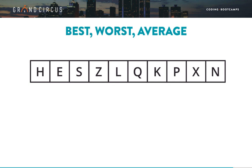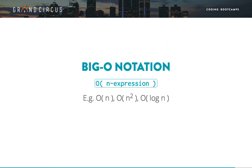Let's look at the most common algorithm ratings. These are expressed in what's called big O notation. The format is a capital letter O, which stands for order, followed by a mathematical expression involving the letter N. N represents the amount of data, or the number of elements, that need to be processed — for example, the length of our array.